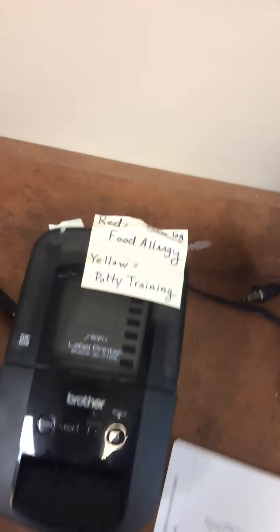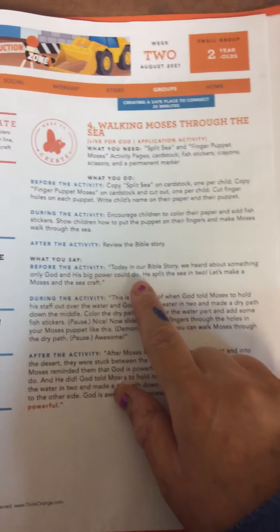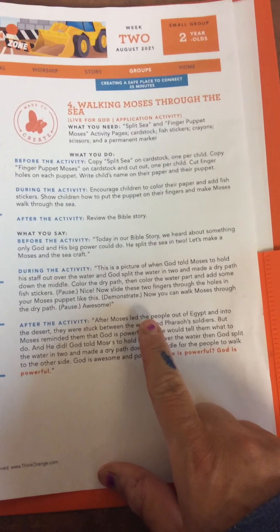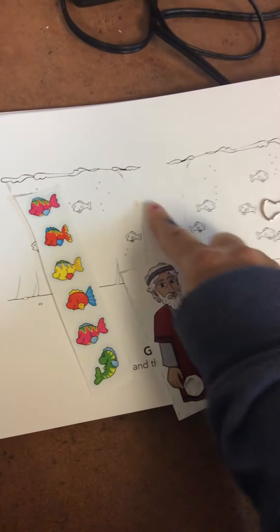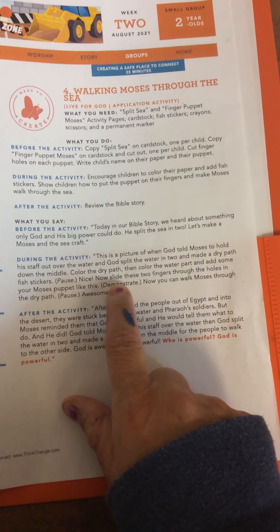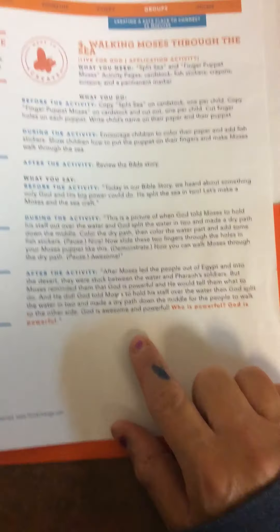The last activity is a craft. Give each kid a sheet that looks like this, a set of fish stickers, and a little Moses finger puppet. Say: today in our Bible story we heard about something only God and his big power can do — he split the sea in two. This is a picture of when God told Moses to hold the staff over the water and split the water in two, making a dry path down the middle. Have them color the dry path, then color the water part and add fish stickers. Show them how to slide two fingers through the holes in the Moses puppet and walk Moses through the path. Summarize the story, reminding kids who is powerful — God is powerful.